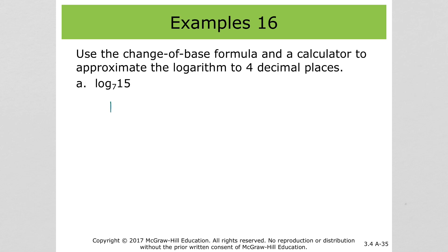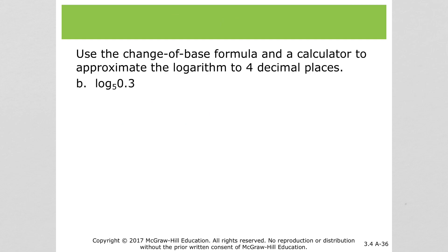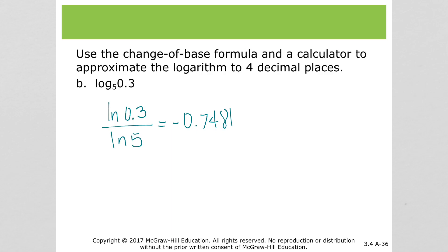For log base 7 of 15: that's log of 15 over log of 7. Put that in your calculator to get approximately 1.3917. For log base 5 of 0.3, let's use natural log: ln(0.3) over ln(5). Put that in your calculator and you get approximately negative 0.7481. And that concludes lesson 3.4.